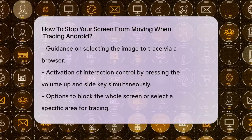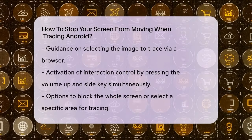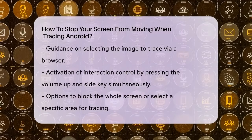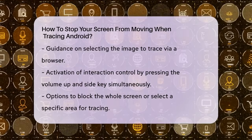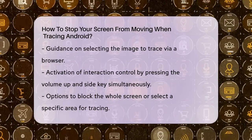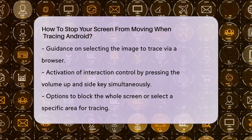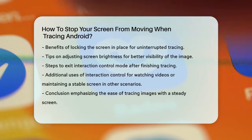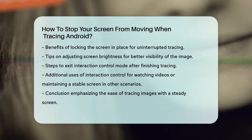Once you've set this up, your screen will be locked in place, allowing you to trace the image without any interruptions. You can adjust the brightness of your screen to make the image more visible, which can be really helpful. When you're done tracing, simply press the Volume Up button and the Side key again to exit the Interaction Control mode. This will unlock your screen and you can use your device as normal.